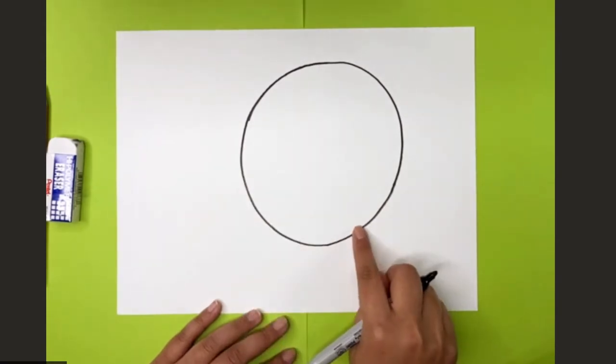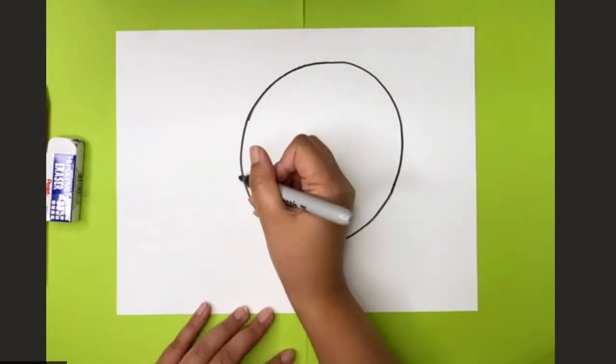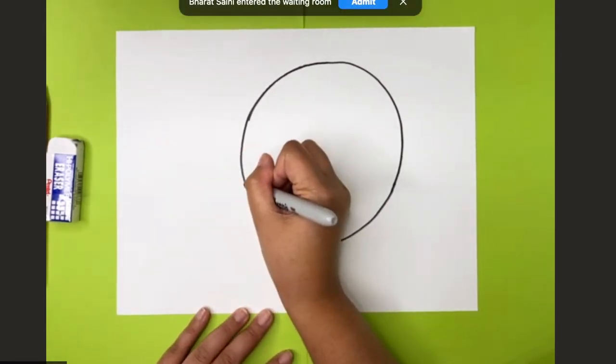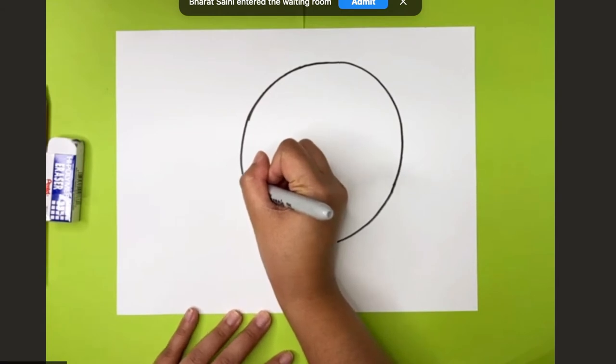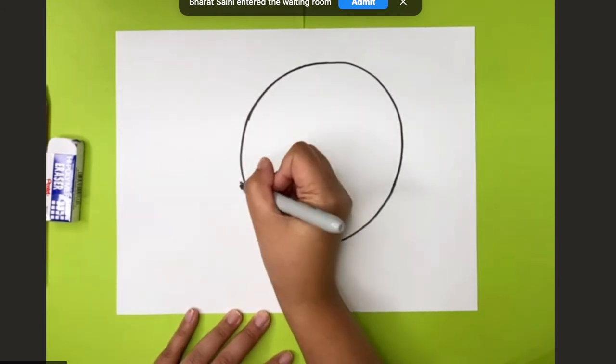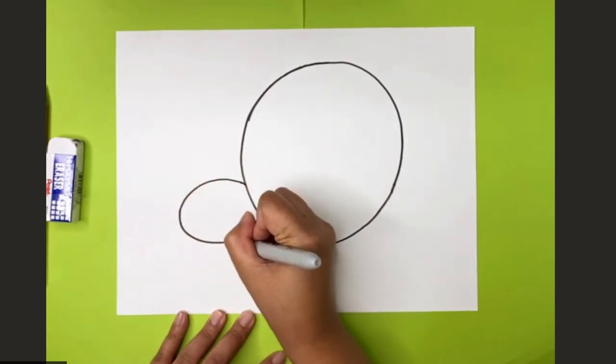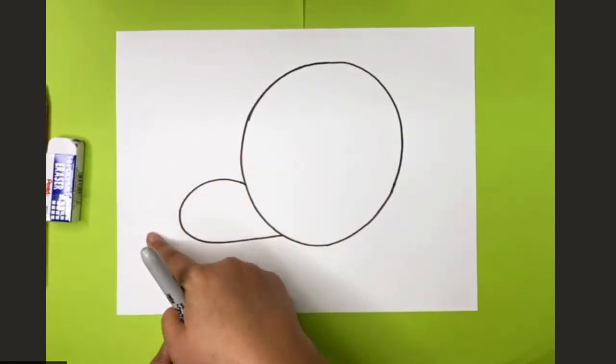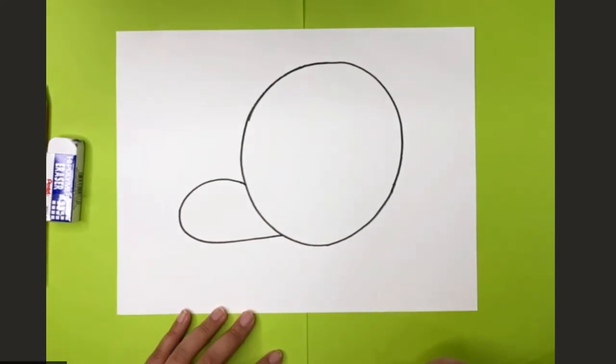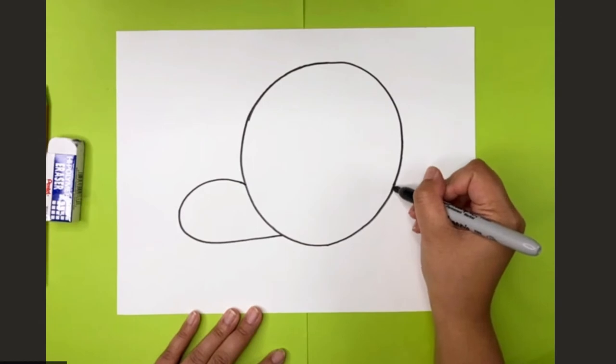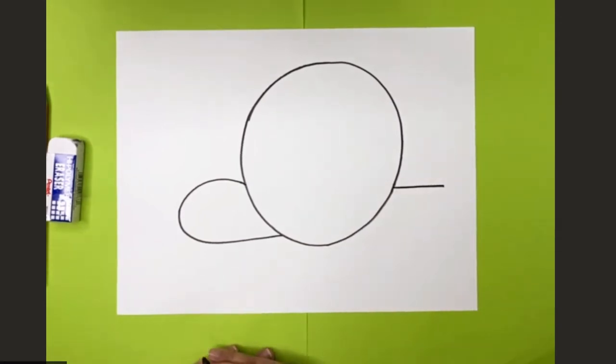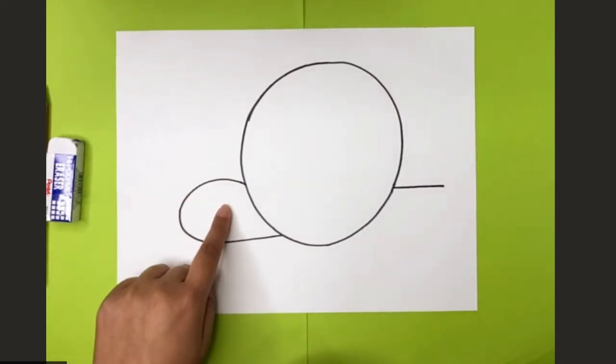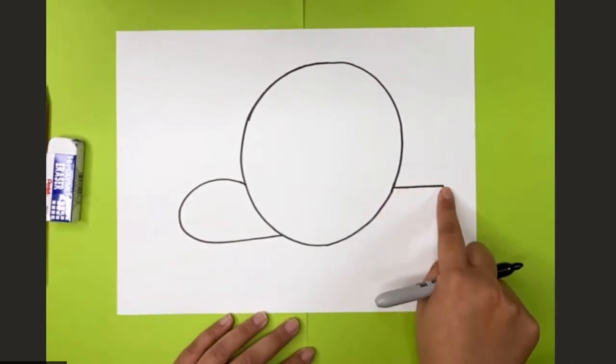Okay, so now that we have our big circle, I'm going to draw the front part of my slug. So I'm going to put my pencil here towards the end of my circle on the side and I'm going to make a long curve like this. And then on this side, I'm going to draw just a straight line.